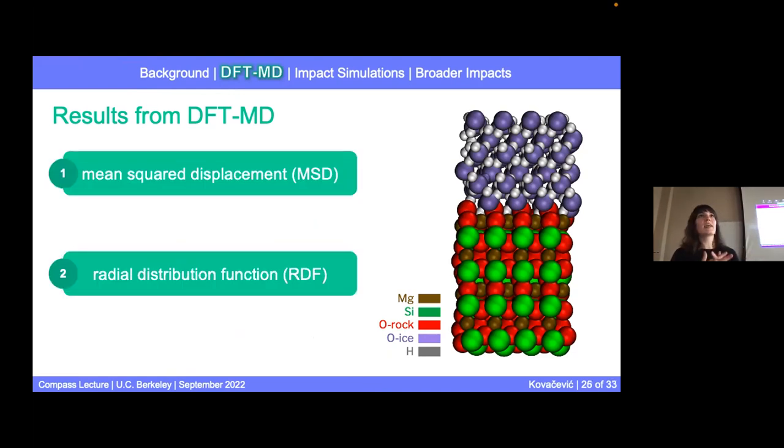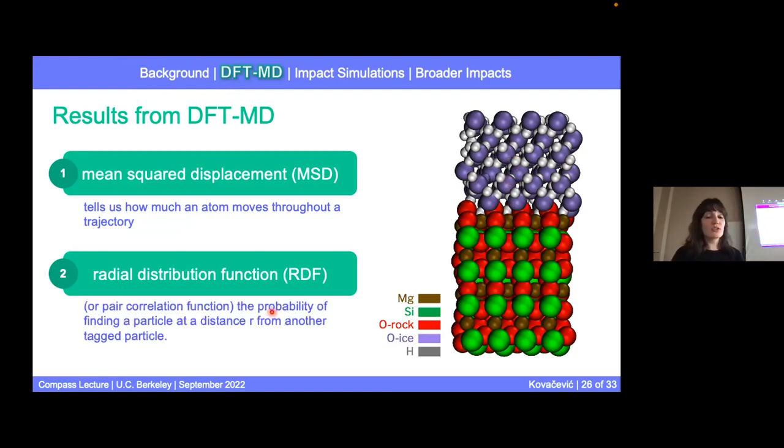So we use two quantitative methods. We can calculate the mean square displacement and the radial distribution function for certain atomic pairs. The MSD is going to tell us how much an atom moves throughout a trajectory. So if we do this just in one dimension in the Z direction, if the atom moves a lot, that's one way we can interpret that maybe these are mixing since that atom is moving a lot and maybe crossing over this interface boundary. The radial distribution function, or sometimes you also see pair correlation function, it's the probability of finding a particle at a distance r from another tagged particle.